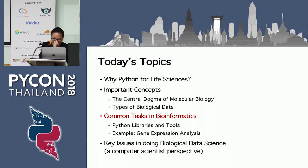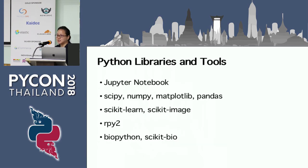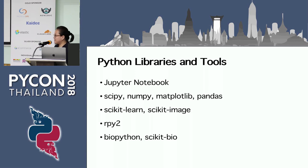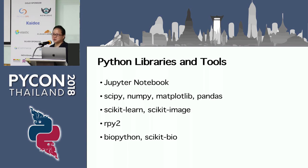Now I would like to briefly talk about the Python tools and libraries available for working with these data types. We use Jupyter Notebook for collaboration between computer scientists and biologists. We use SciPy and NumPy for data analysis, Scikit-Learn for machine learning, and Scikit-Image for generating images from biology data. We also use a lot of functions from RPy2 to interface with R language, because many libraries in this field are available only in R.